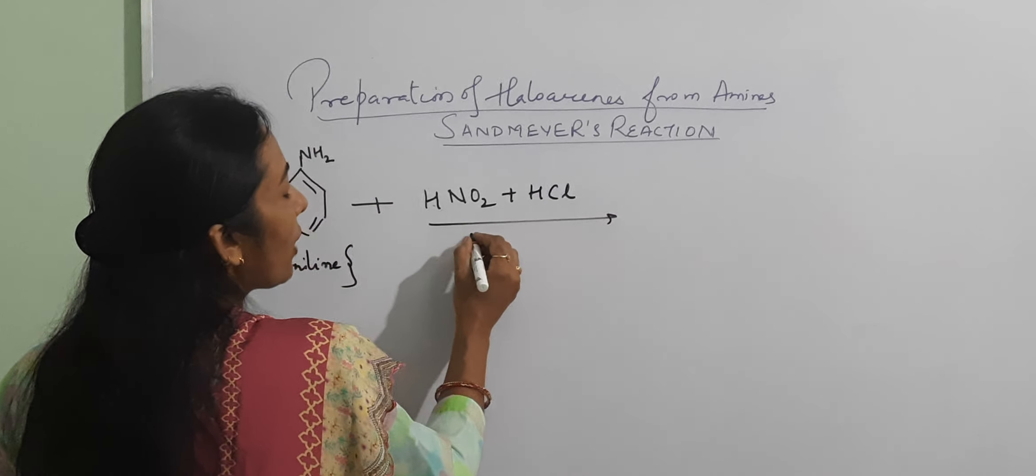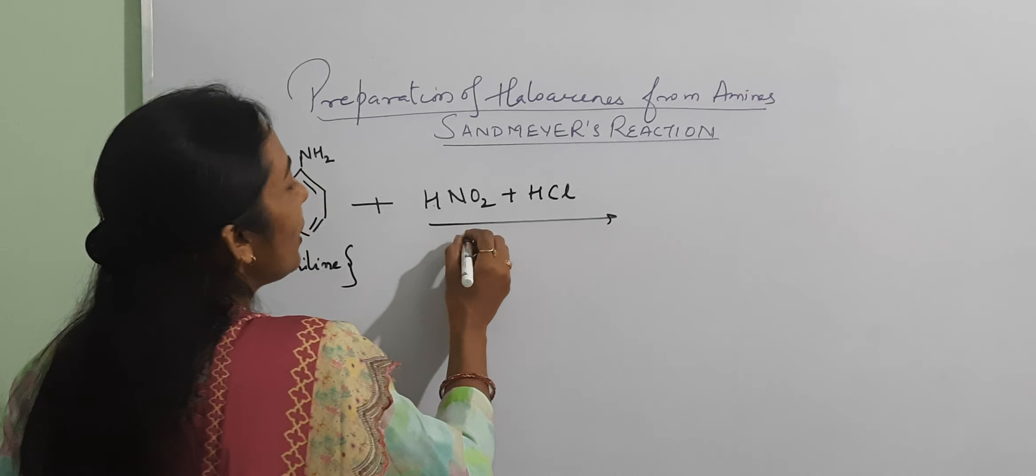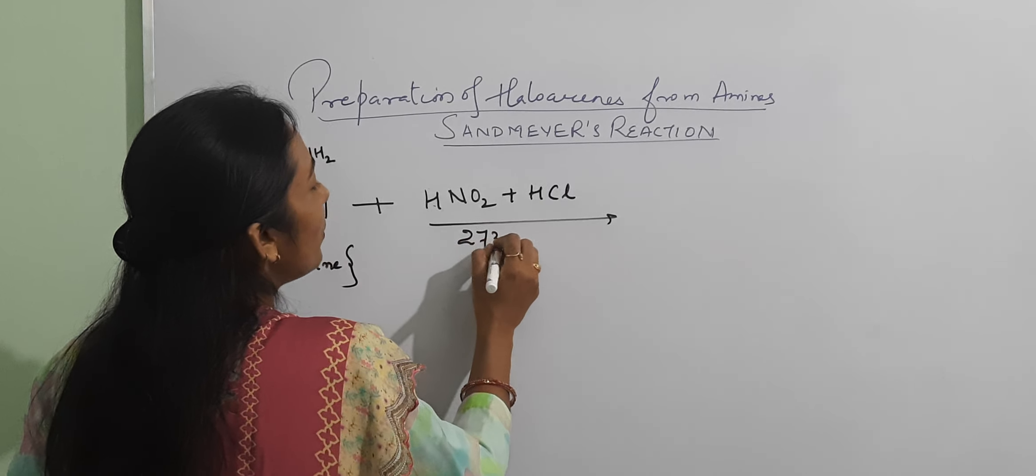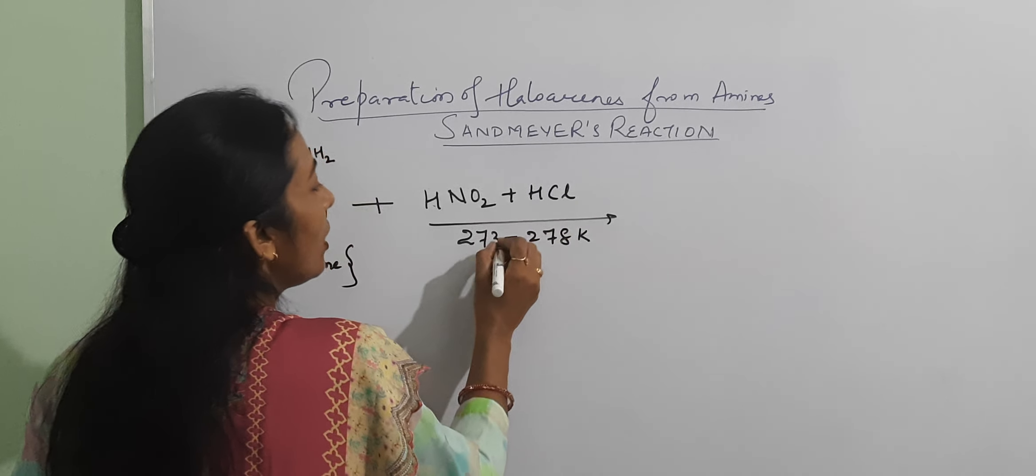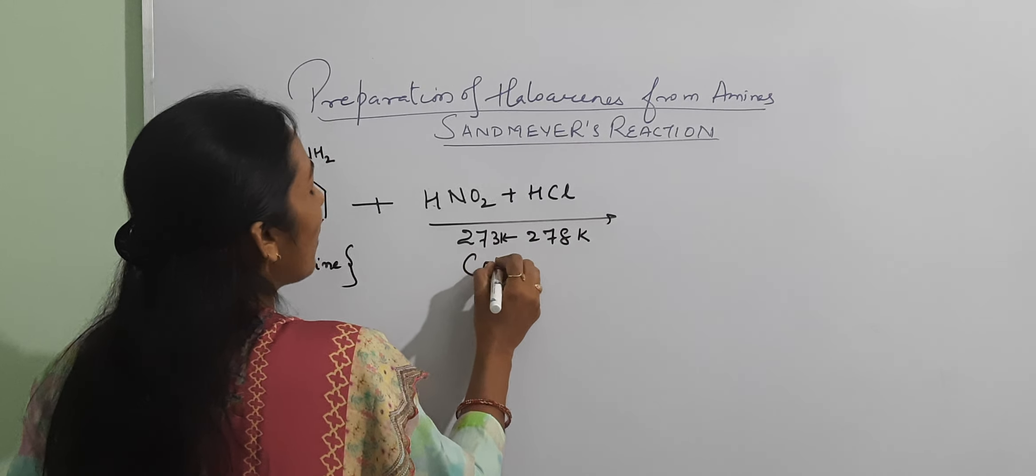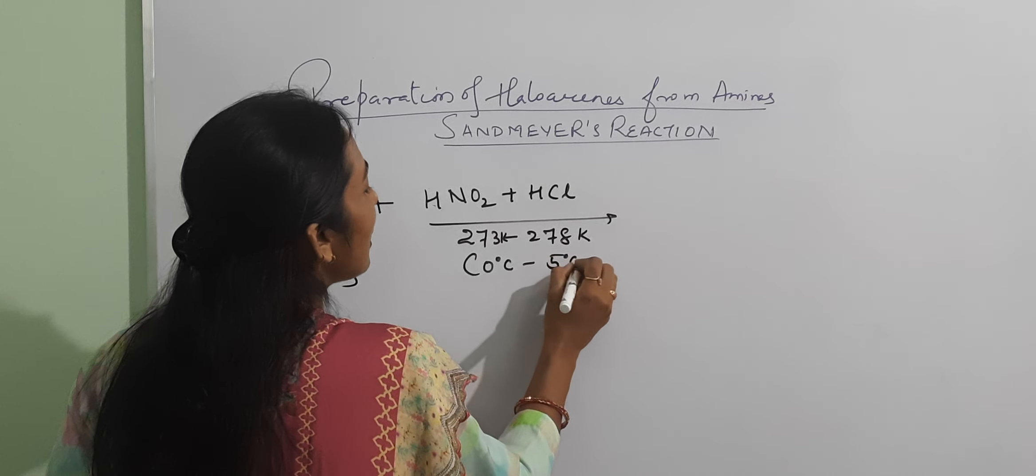Temperature is 0-5 degrees. So in Kelvin scale, that is 273 to 278 Kelvin. In degree Celsius, we are having 0 degree Celsius to 5 degree Celsius.